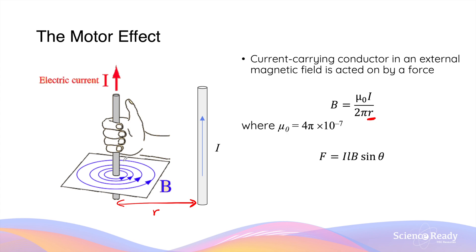We can derive a new mathematical equation for the force between these two conductors due to the motor effect. The equation for the motor effect is F = BIl sinθ. The current I in this equation refers to the current in the second conductor, l is the length of the conductor, B is the strength of the external magnetic field produced by the first conductor, and θ is the angle between the conductor and the radial magnetic field, which is always perpendicular, so θ = 90°.